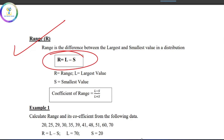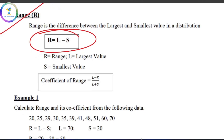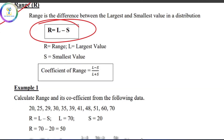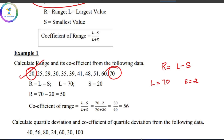We will talk about the range. R is equal to L minus S. The largest value is 70 and the smallest one is 20. Therefore, R is equal to 70 minus 20, which is equal to 50.